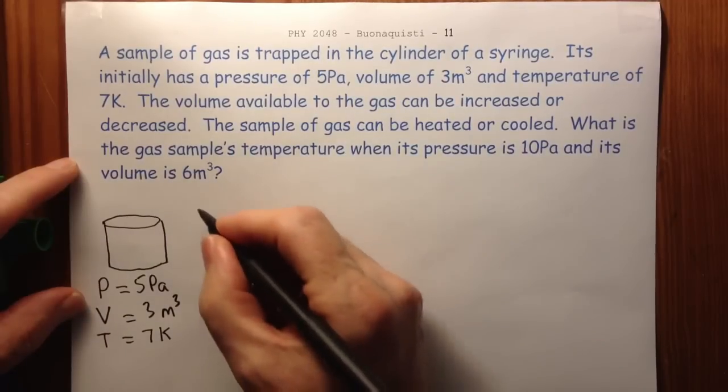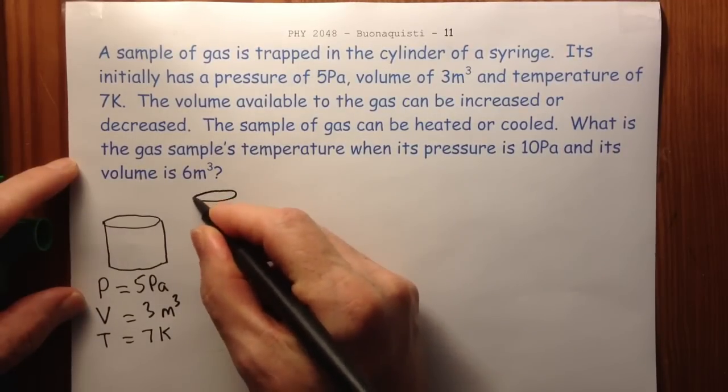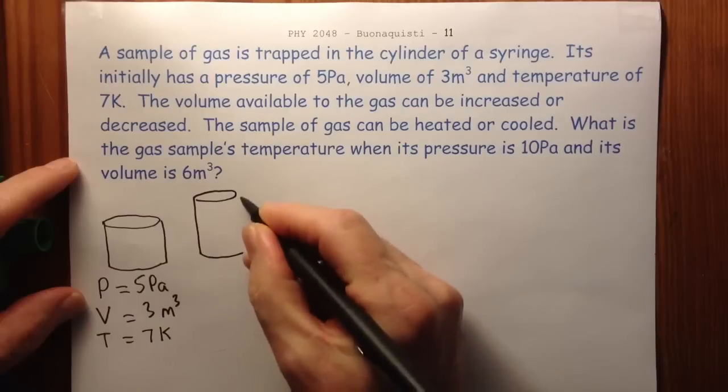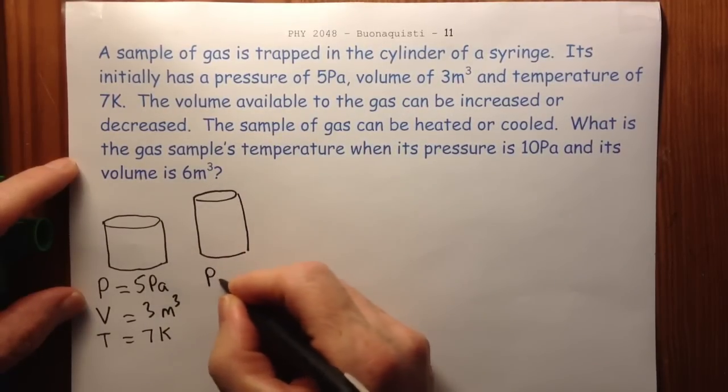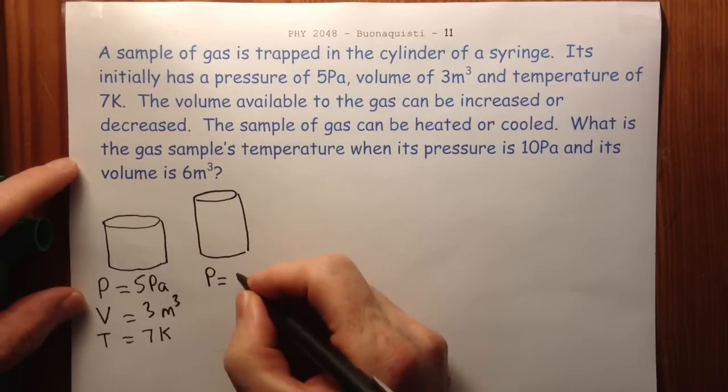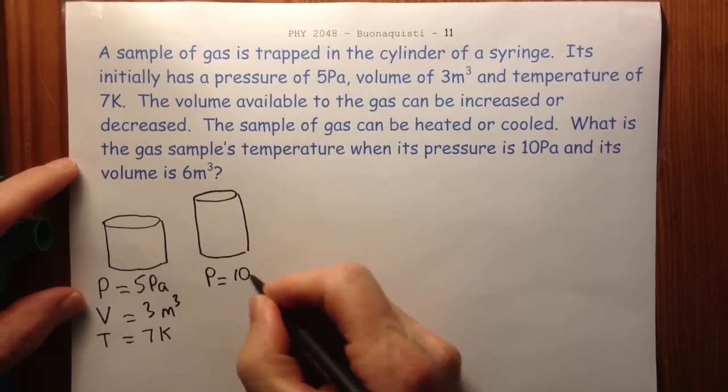And then we change the volume available and we generally mess with the gas. And we have a final pressure equal to, according to these numbers, 10 Pascal.